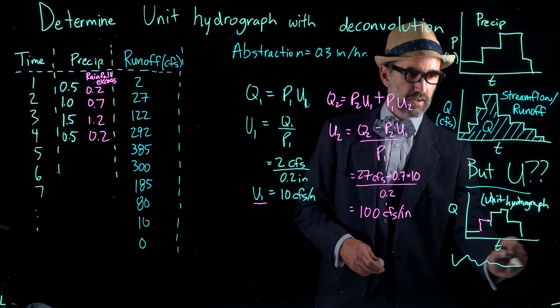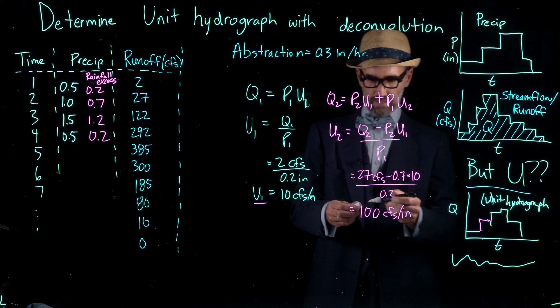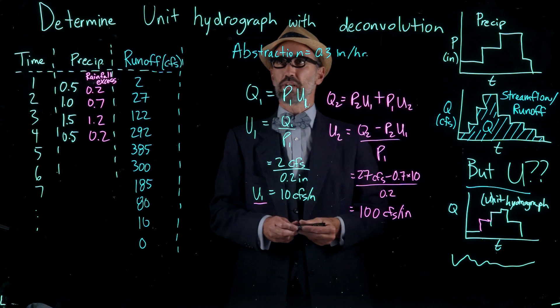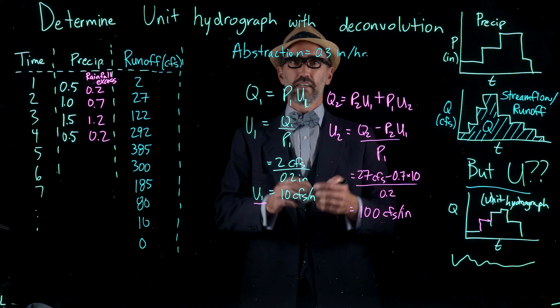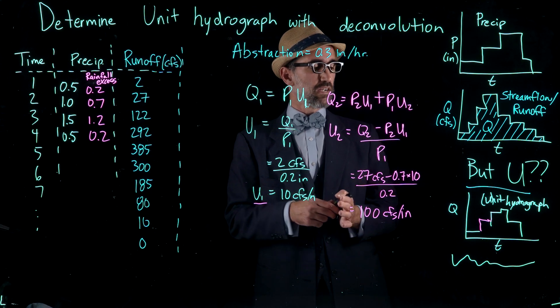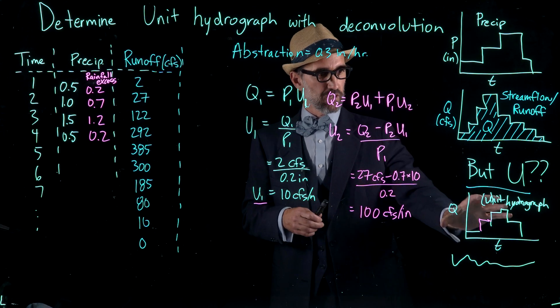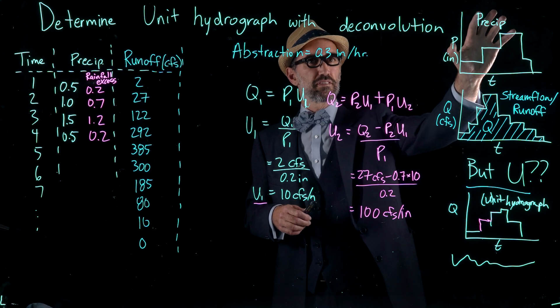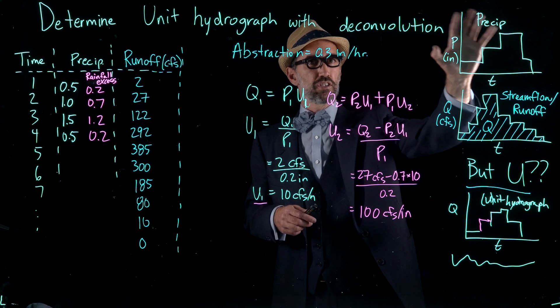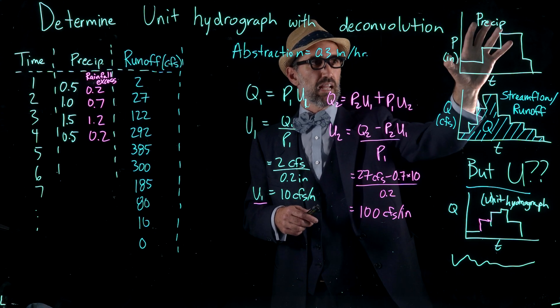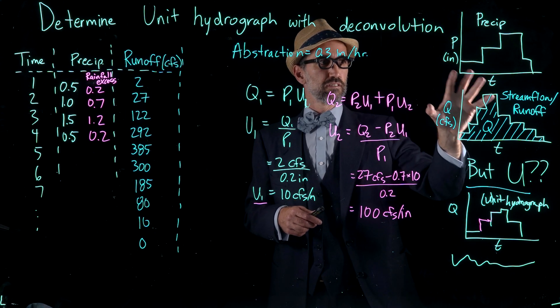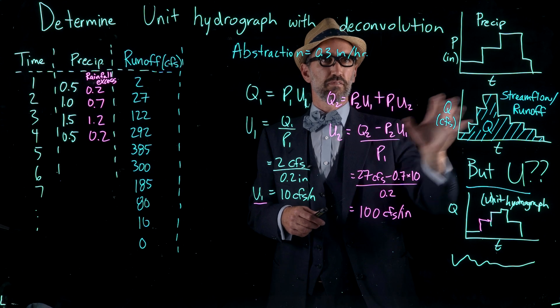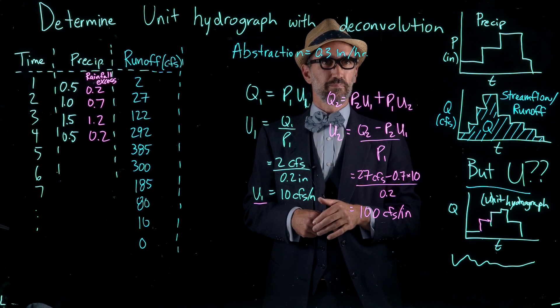Using this exact same method, we could go on and solve for the other elements of our unit hydrograph, deriving a full unit hydrograph that would look something like this. Now you can use that unit hydrograph with a precipitation input — just like we solved in the last problem — to solve for streamflow for a different storm.